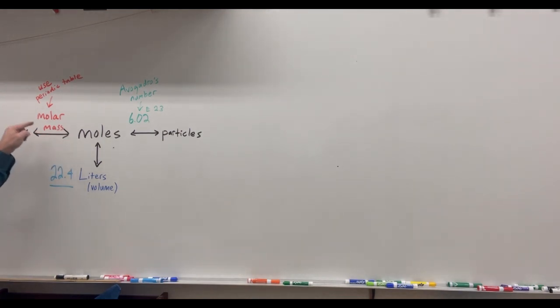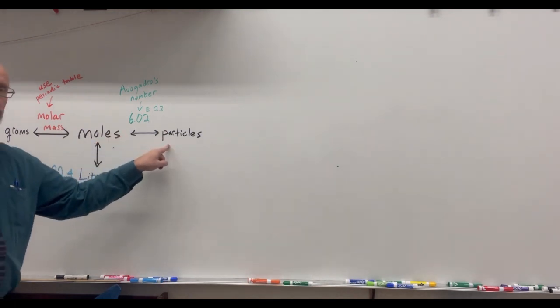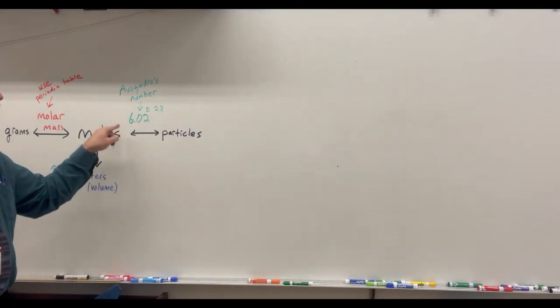To do that we'll be using the molar mass which we get from the periodic table. Or we can connect moles to liters to the volume of a gas at STP. We use this number 22.4 liters per mole of any ideal gas at STP. And if we want to go moles to particles, which could be atoms, could be molecules, we'll be using Avogadro's number 6.02 times 10 to the 23rd.